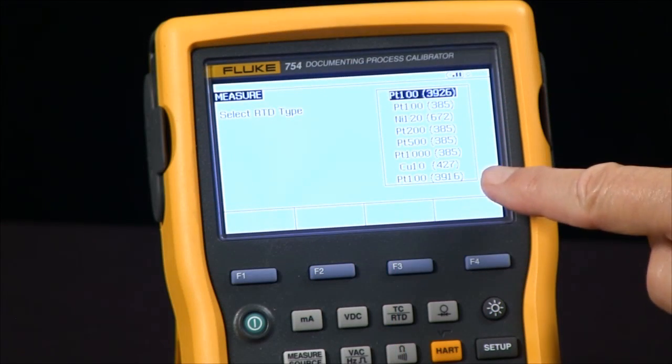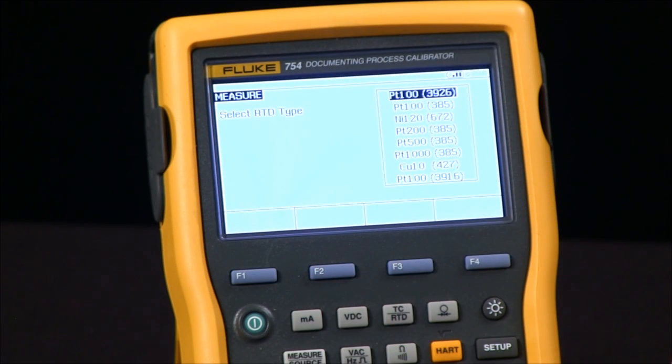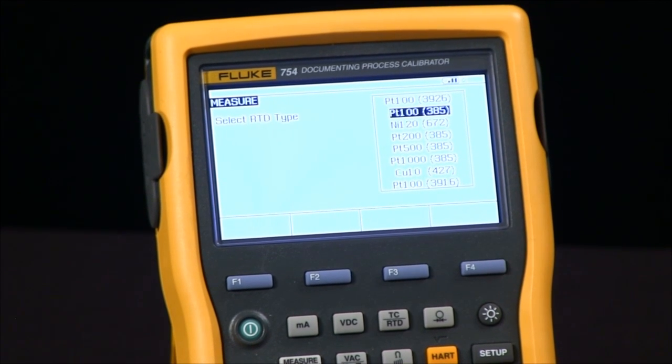Then we get a choice of different types of RTDs. I'm going to select platinum 100 ohm.